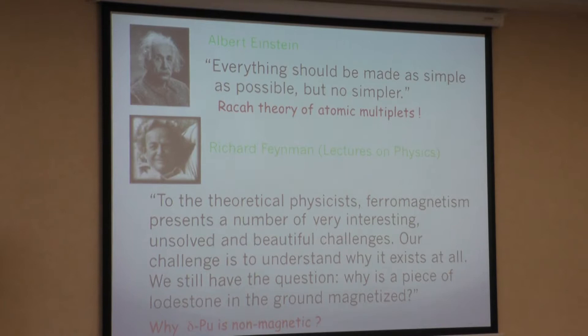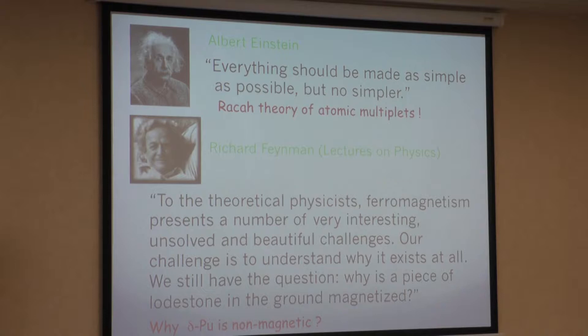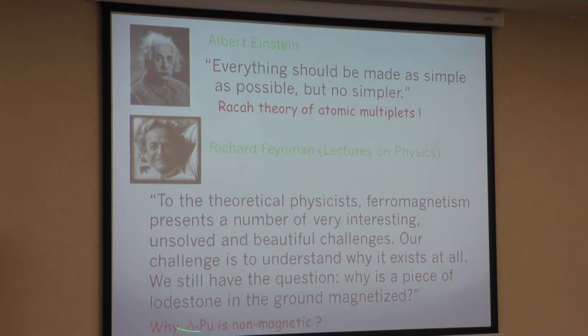It's a little bit technical and complicated, but coming back to a nice reference from Albert Einstein: everything should be made as simple as possible, but not simpler. The Racah parameter and multiplet theory is pretty complicated and numeric. And also from magnetism, there is an interesting quotation from Feynman in his lecture notes, that ferromagnetism is a beautiful and interesting problem for theoretical physics — even the challenge of why a piece of lodestone or magnetite is ferromagnetic in the ground state.